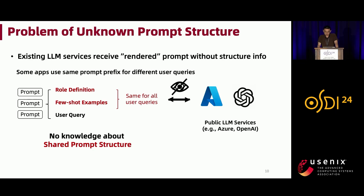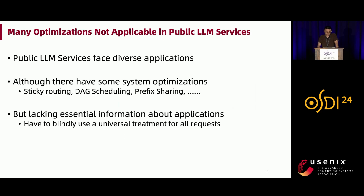Beyond request dependency, the public LLM service receives rendered prompts with no knowledge about prompt structure. But many production applications use a shared prompt for different user requests — they have a specific prompt structure like defining a role and a few examples. This part is the same for all user queries. Without knowing the prompt structure, it's hard to efficiently detect and exploit sharing opportunities, leading to redundant storage and computation for the shared part.